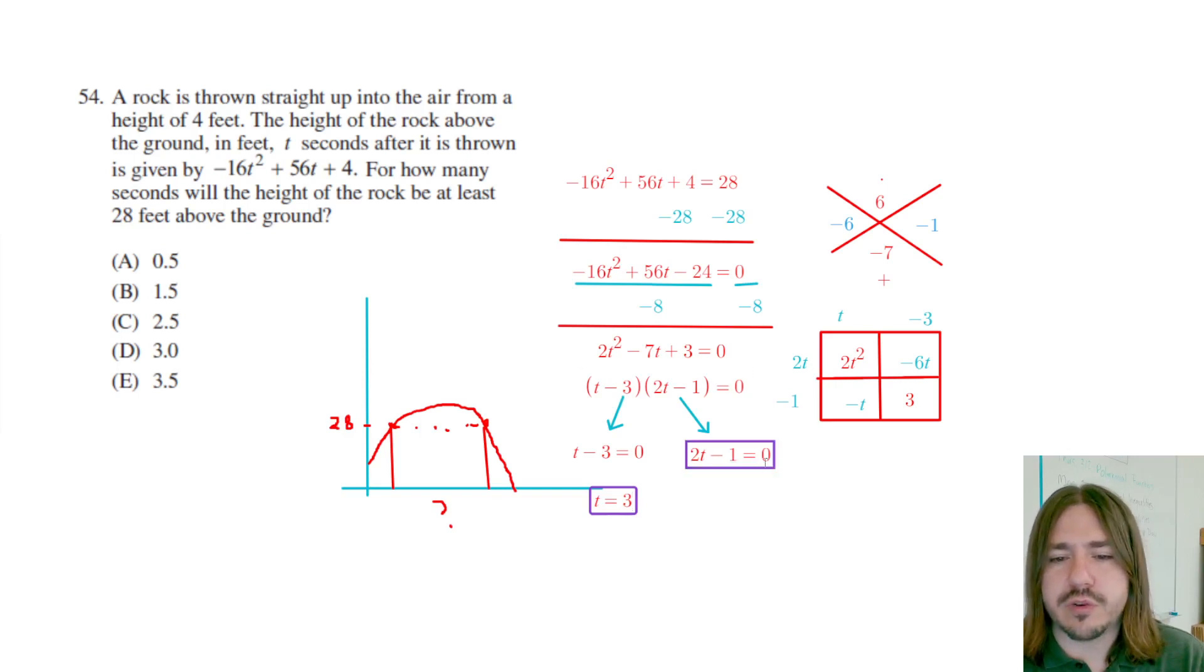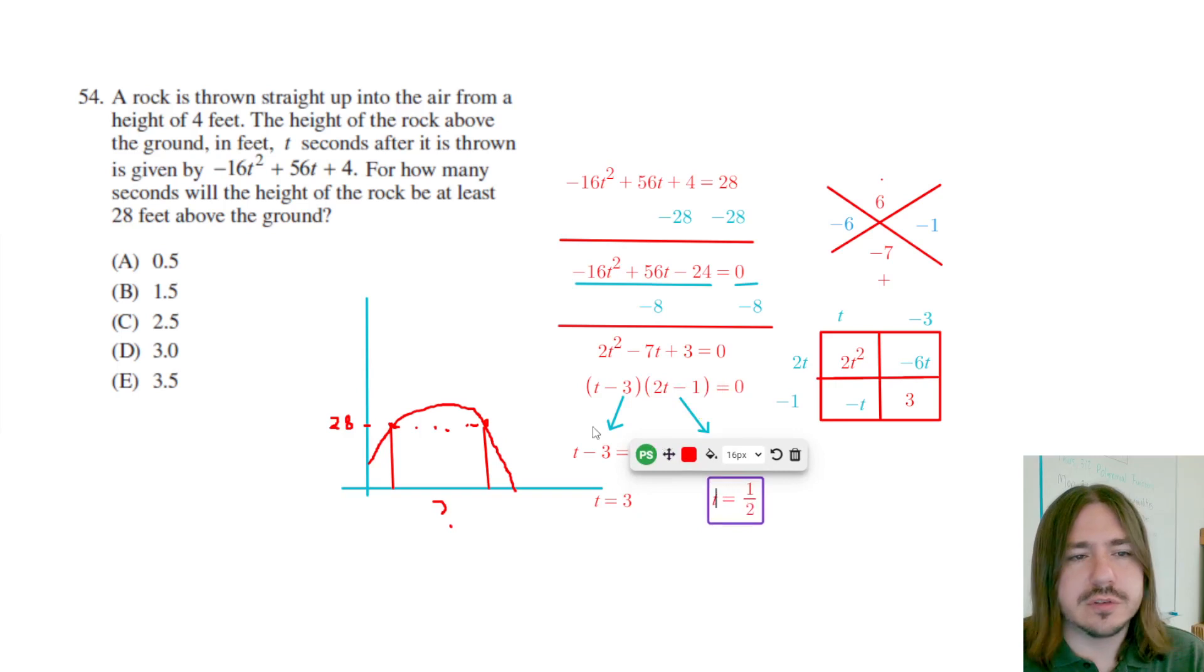And here we will add one and then divide by two. So we get one half. So that means that the two t values for when the rock is at 28 feet are going to be at one half, which is going to be this time right here, and then also three.